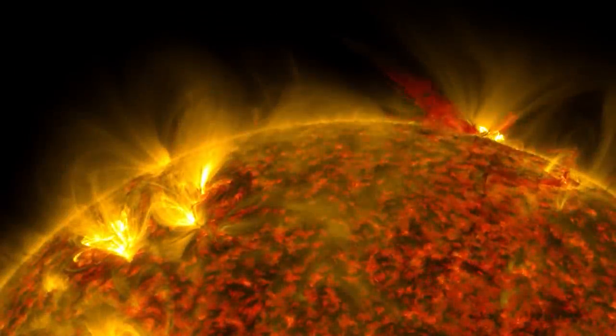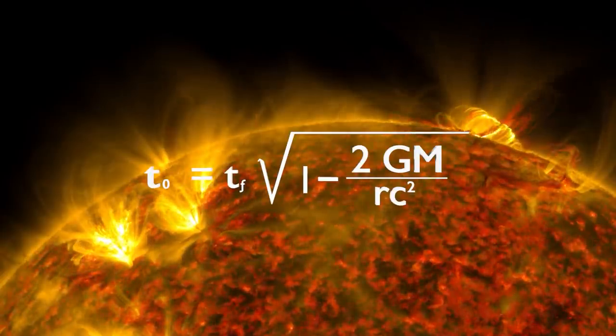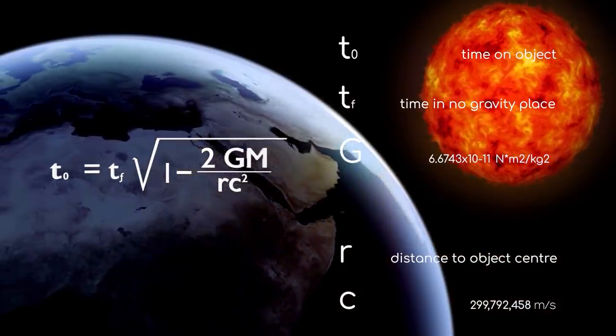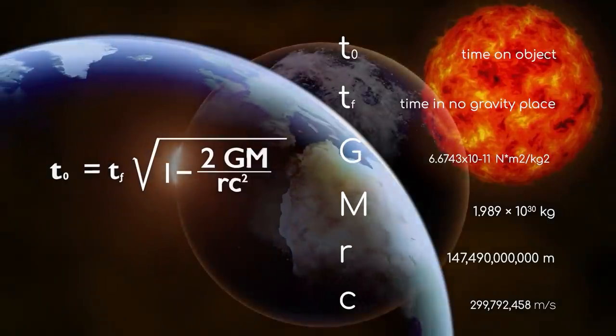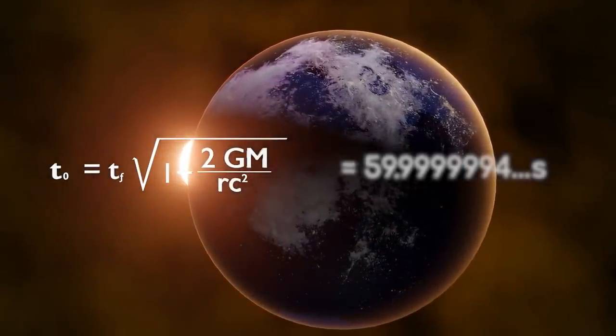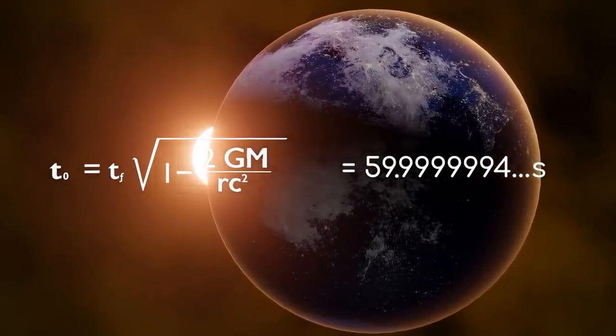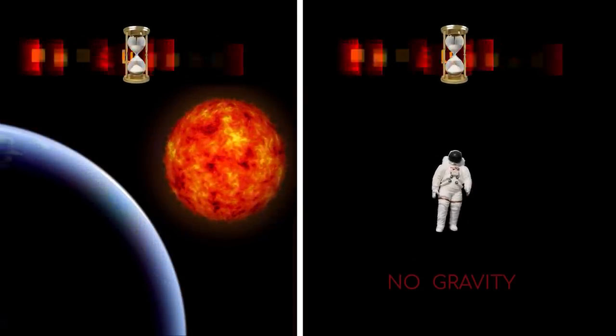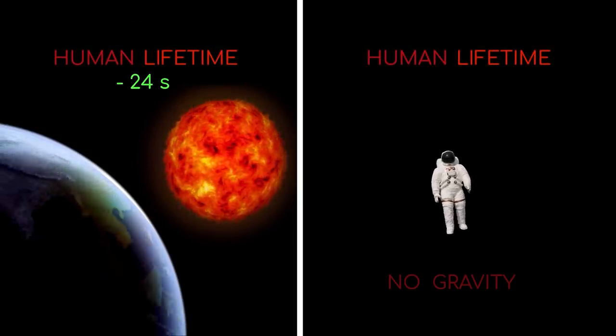However, we here on Earth are not just affected by our planet's gravity, we are also affected by the gravity of the Sun, which in terms of our equation is much more significant. So let's try this again by inputting the mass of the Sun, and our distance from it, into the equation. This gives us the new figure. How much time goes by for us on Earth for every 60 seconds of actual time that goes by? 59.9999994 seconds. While this is a more significant number, it does mean that you are only seeing a difference of a second once every 3 years or so. Or in other words, about 24 seconds over the course of an average human lifetime.